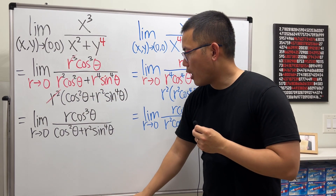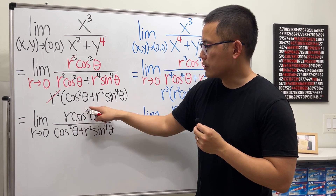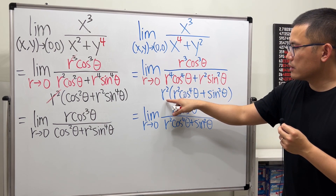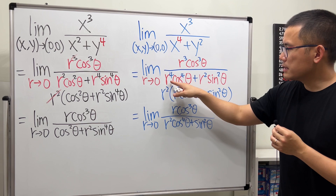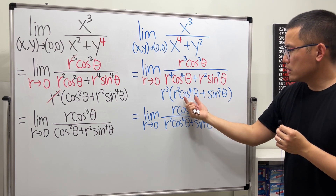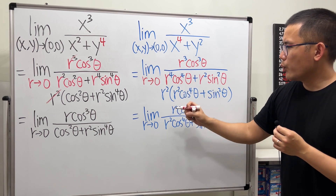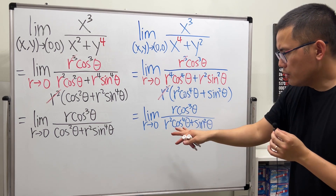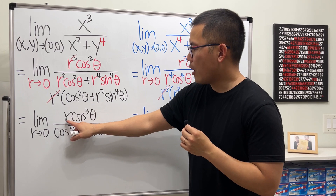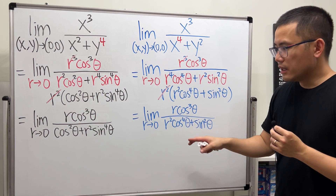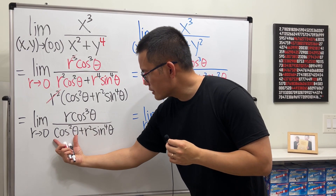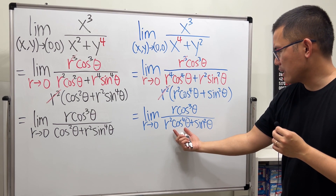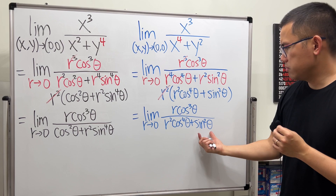We can factor out r² from the denominator. Canceling r² with part of the numerator leaves r·cos³θ on top. Similarly factoring r² from the denominator gives r²·cos⁴θ + sin²θ. So both expressions have r·cos³θ on top, with the denominator being cos²θ + r²·sin⁴θ for the first and r²·cos⁴θ + sin²θ for the second.